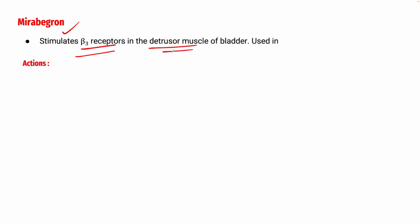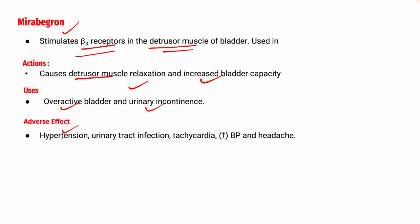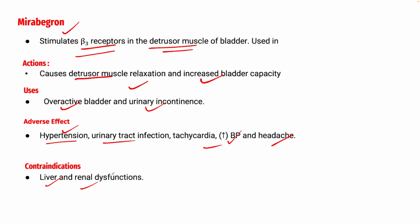The next drug is mirabegron, which stimulates beta-3 receptors in the detrusor muscles of the bladder, causing detrusor muscle relaxation and increasing bladder capacity. It is used in overactive bladder or urinary incontinence. Adverse effects include hypertension, urinary tract infections, tachycardia, and headache. Contraindications include liver and renal failure or renal dysfunction.